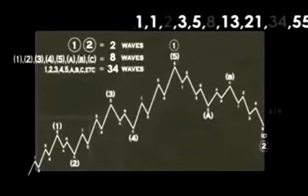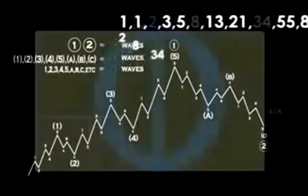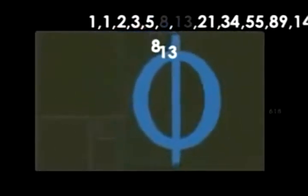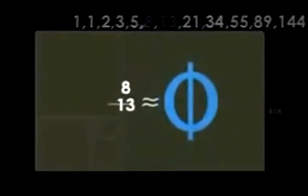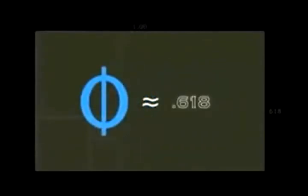The wave principle is governed by a ratio called the golden mean, or phi. The ratio of any two consecutive numbers in this sequence approaches phi, an irrational number which is approximately 0.618.